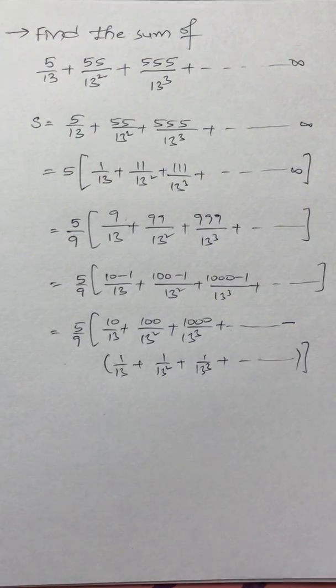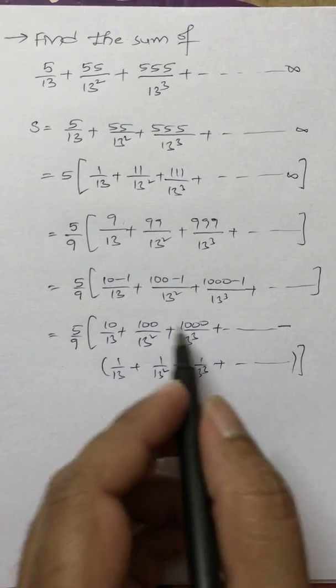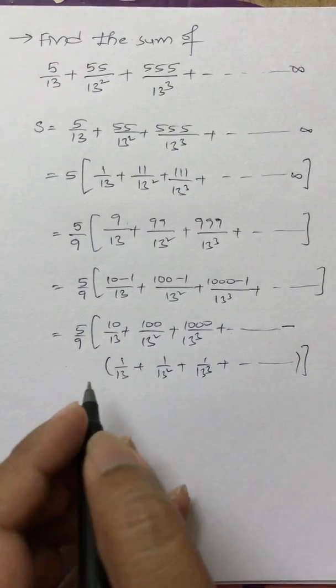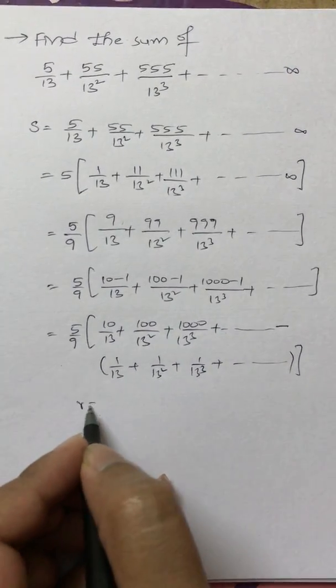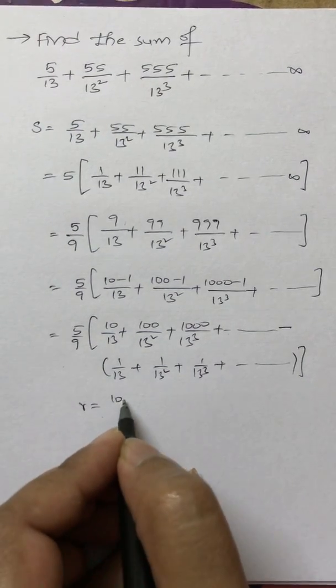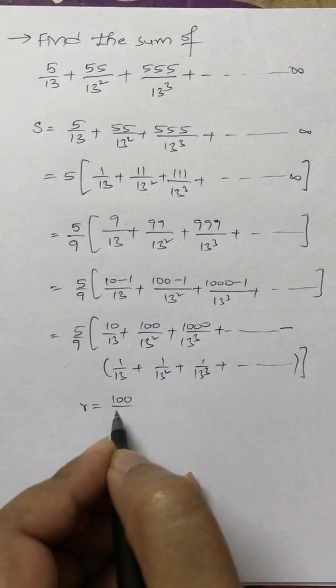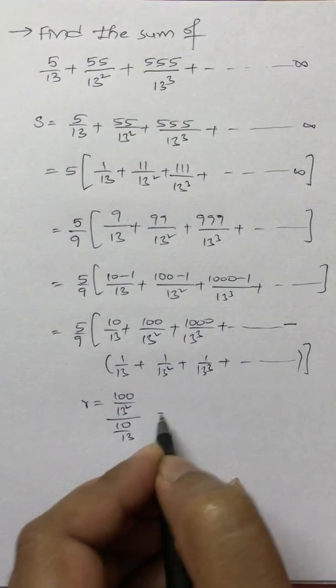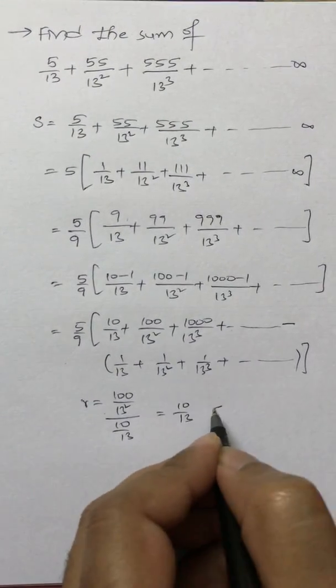So this is a GP. If I write the common ratio in GP, R equals 100/13² divided by 10/13, which is 10/13, less than 1.